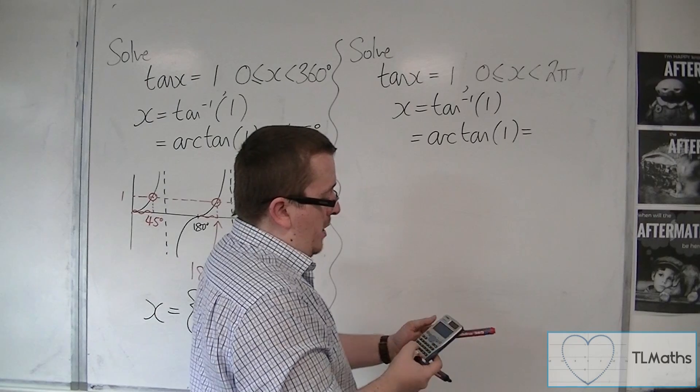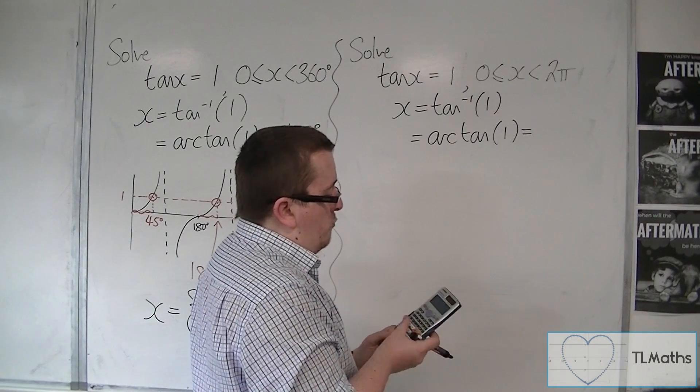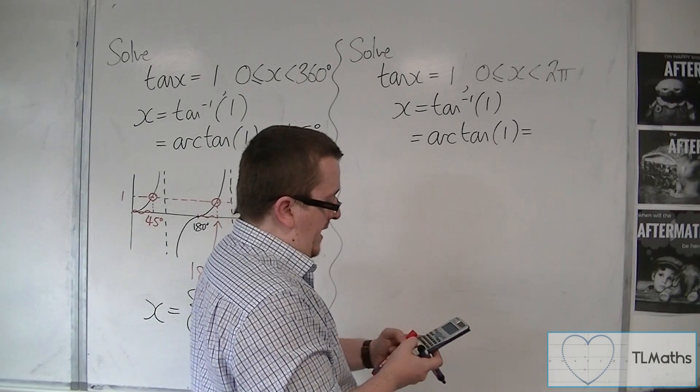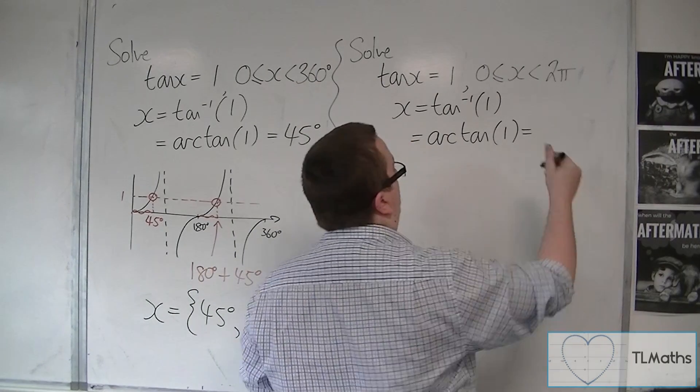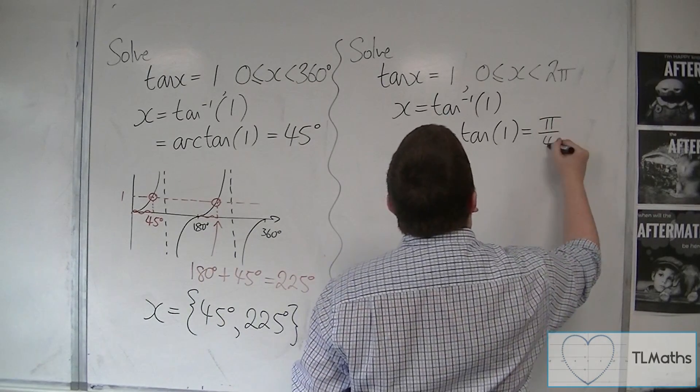So shift, mode, and then number four for radians. Inverse tan of one is one quarter pi, or pi over four.